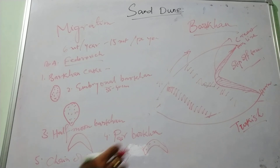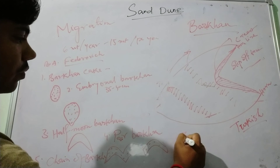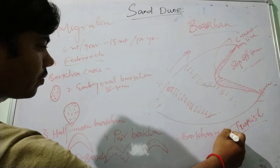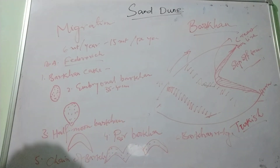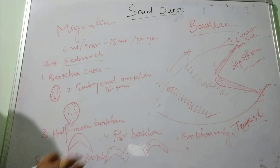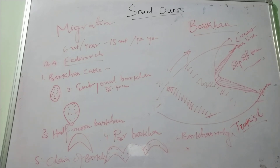The fifth stage is the chain of barkhans — the merging of pear barkhans with one another forms a chain-like barkhan. The sixth is barkhan ridges, which are formed when the wind direction is transverse to the formation of the barkhan. These are the typical forms of barkhans and dune formations which are formed due to the depositional work of the wind.